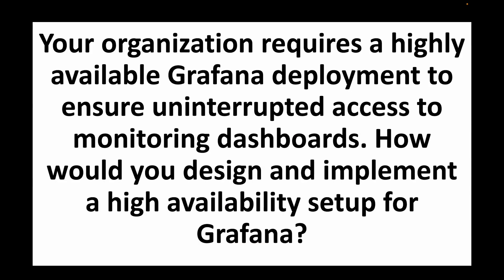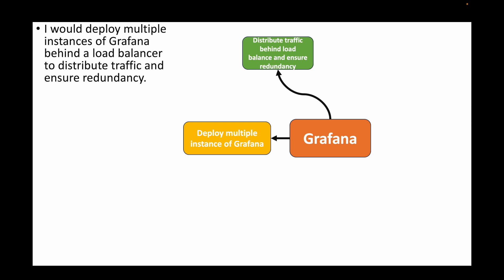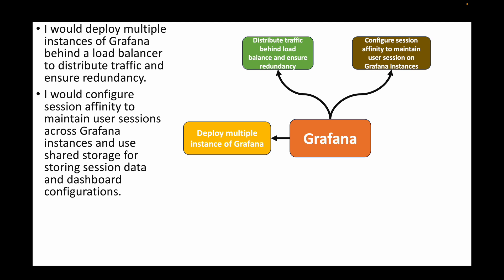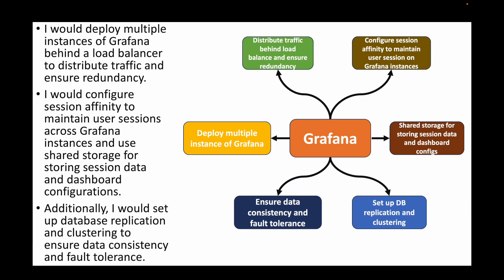The next question: your organization requires a highly available Grafana deployment to ensure uninterrupted access to monitoring dashboards — how would you design and implement a high availability setup? We can deploy multiple Grafana instances behind a load balancer to distribute traffic and ensure redundancy. We can also configure session affinity to maintain user sessions across instances, use shared storage for session data and dashboard configurations, and set up database replication and clustering to ensure data consistency and fault tolerance.